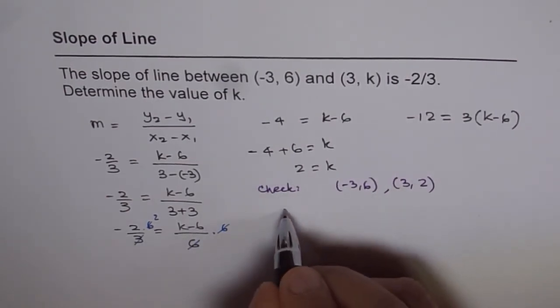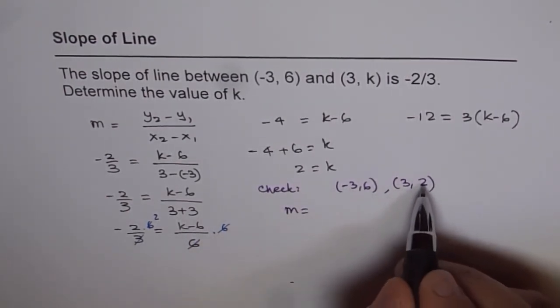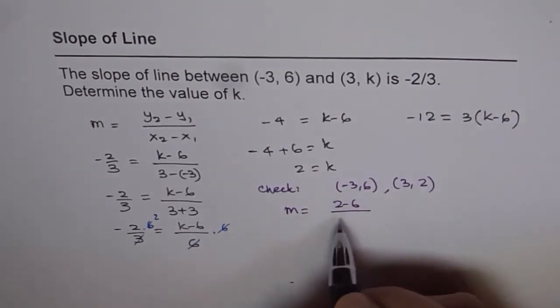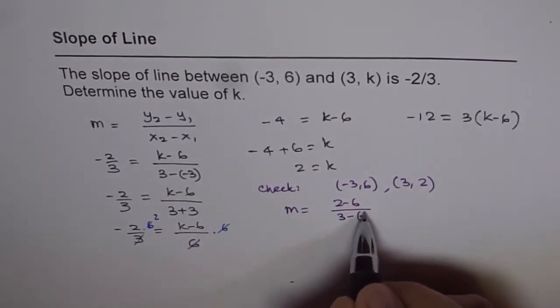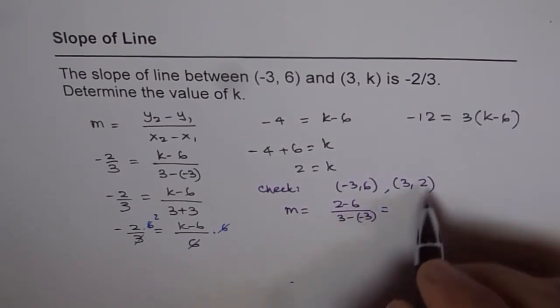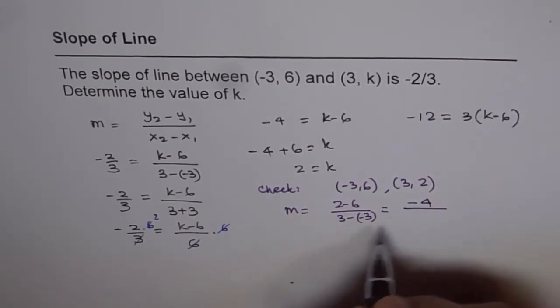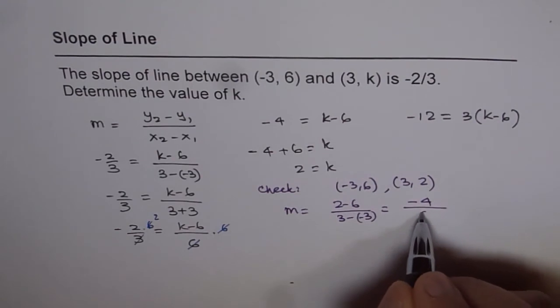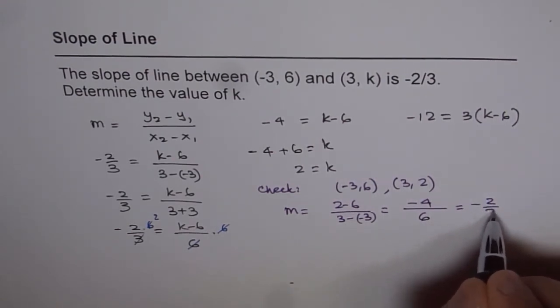Now between these two points, the slope should be 2 minus 6 over 3 minus (-3). So we get 2 minus 6 is -4 and 3 plus 3 becomes 6, which is -2/3.